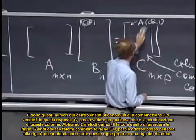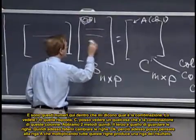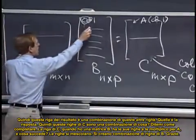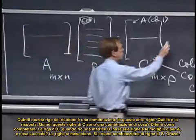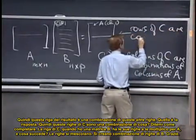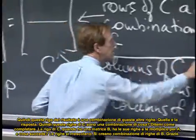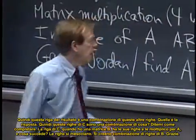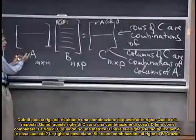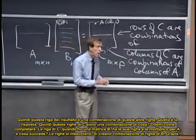Now I can think of a row of A multiplying all these rows here and producing a row of the product. So this row takes a combination of these rows and that's the answer. So these rows of C are combinations of what? Tell me how to finish that. The rows of C, when I have a matrix B, it's got its rows, and I multiply by A. And what does that do? It mixes the rows up. It creates combinations of the rows of B.